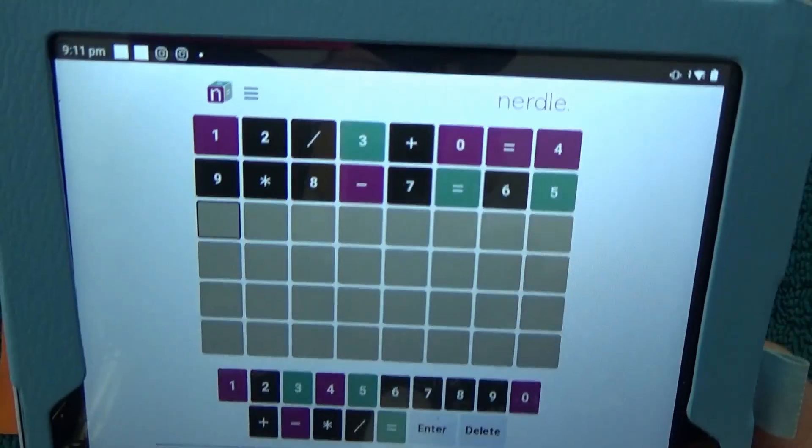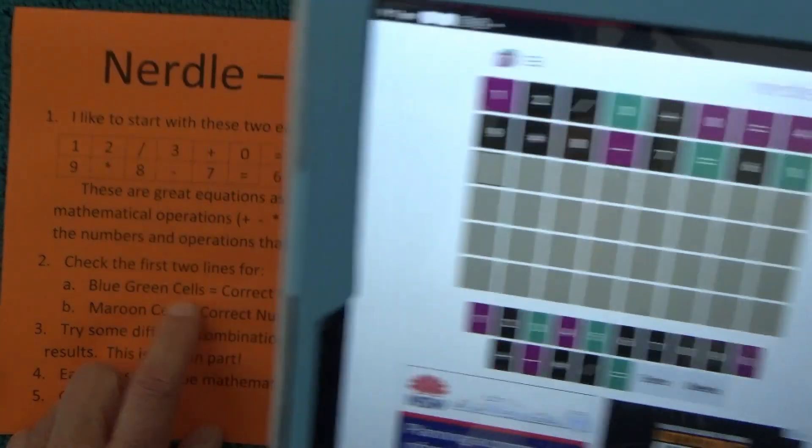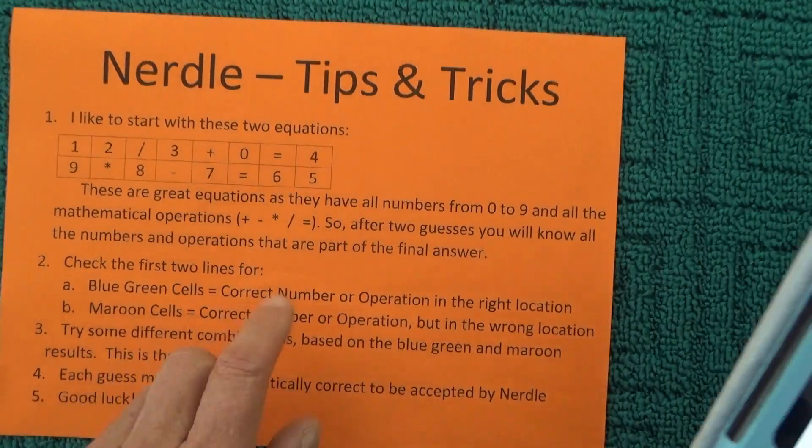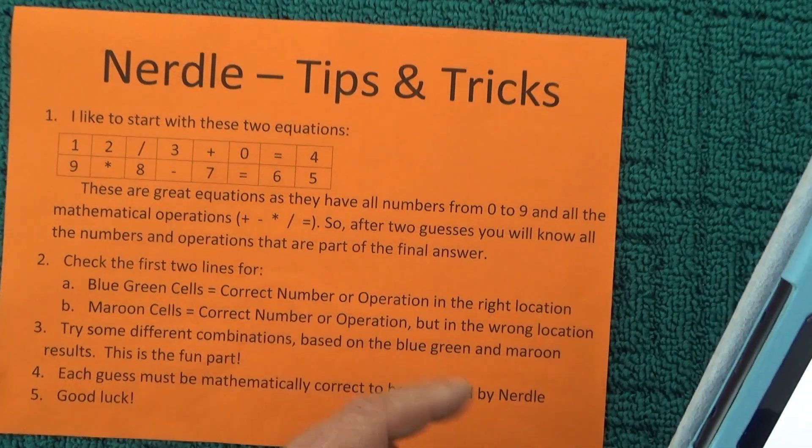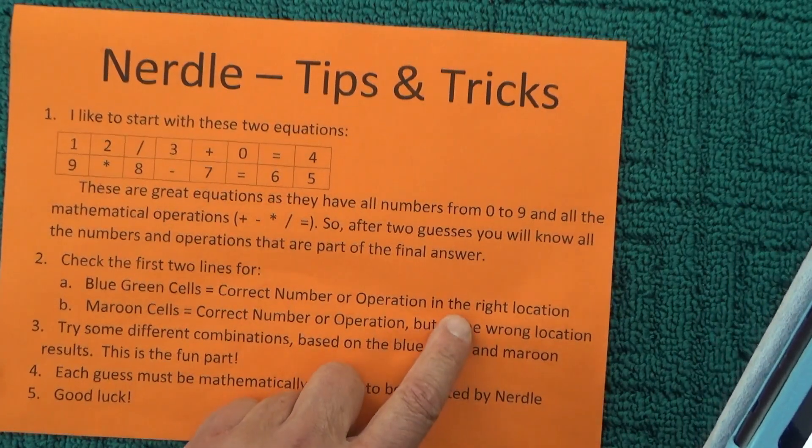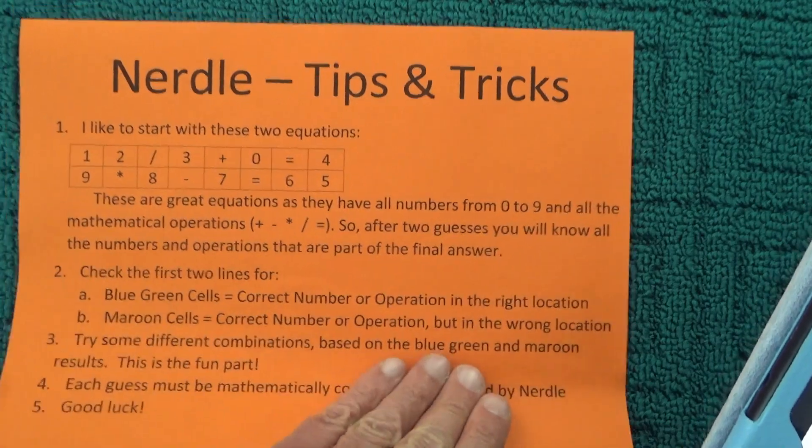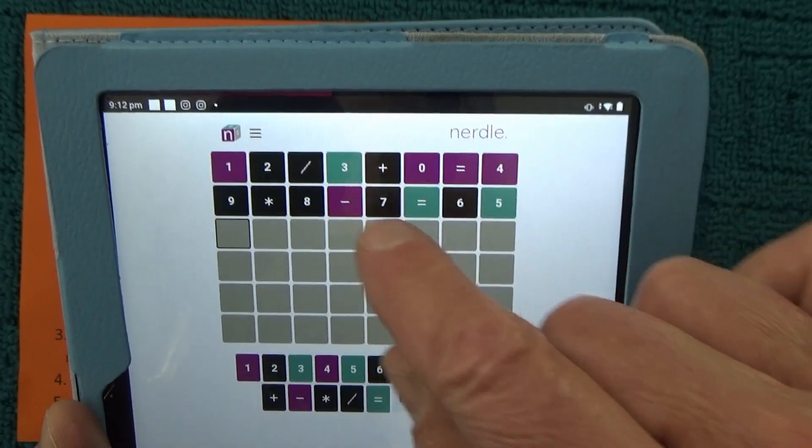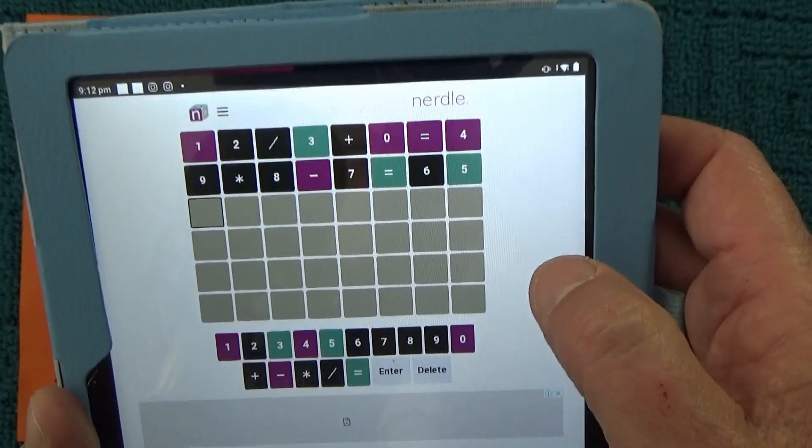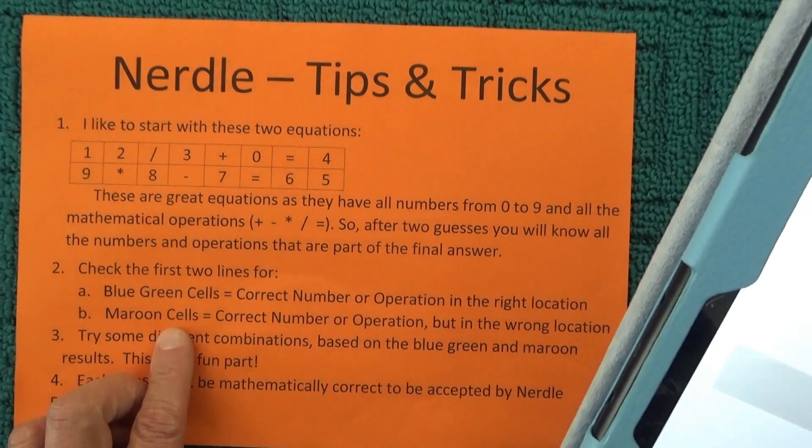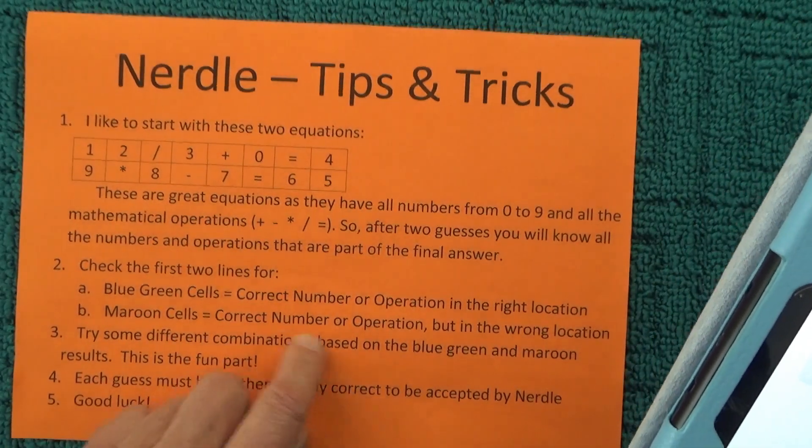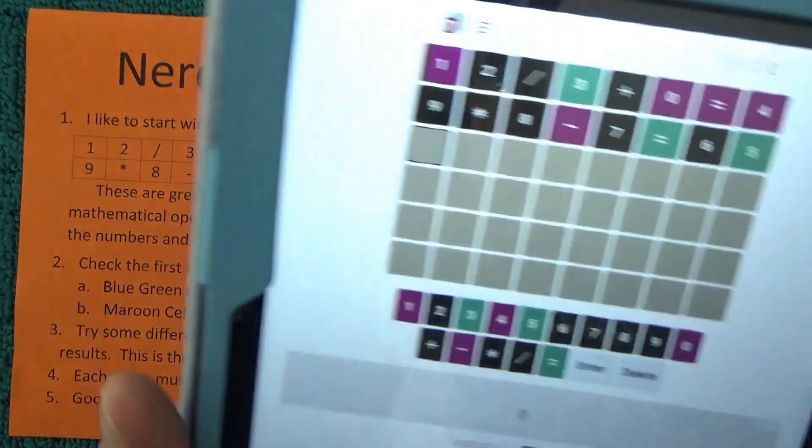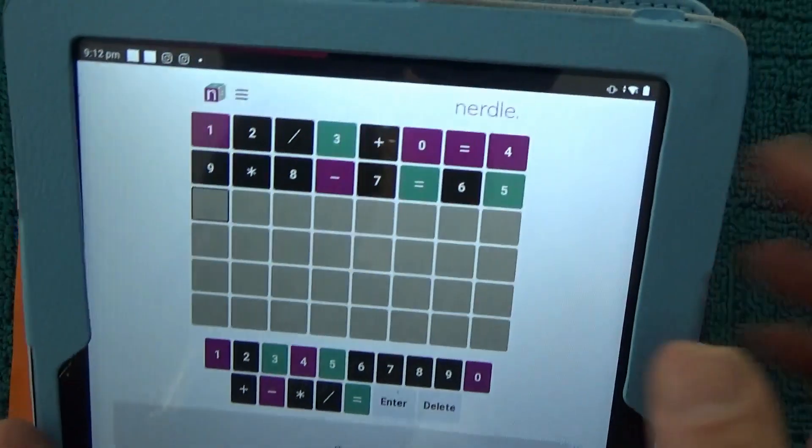So once you've got those two equations in there, you just need to check for the blue-green cells, because the blue-green cells means it's the correct number or operation in the right location. So you can see there that for the 3, equals, and 5, they're all in the correct location. And then the maroon cells,